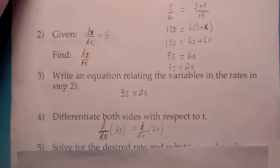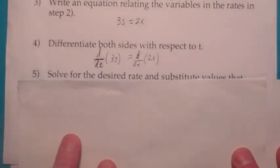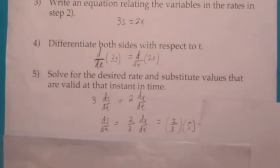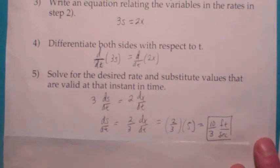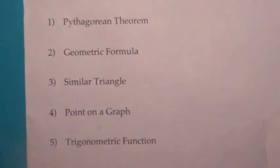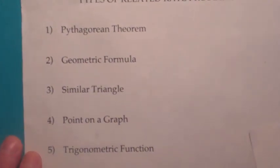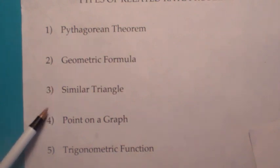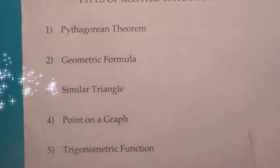Differentiating with respect to t isn't too bad. On the left side you get 3 ds dt, and on the right side you get 2 dx dt. Now remember, we're trying to solve for ds dt, so you divide by 3. And then you plug in for what dx dt is, your final answer is 10 over 3 feet per second. Okay, so there you go, we've talked about all five types of related rate problems. The Pythagorean Theorem, Geometric Formula, Similar Triangle, Point on a Graph, and today we talked about the trigonometric function. Okay, we'll see you in class.